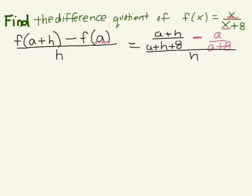We're going to multiply the first term by a plus h plus 8 divided by a plus h plus 8, because we have two fractions and we're trying to add them together, so we have to have the same denominator. On the second term, we're going to multiply by the opposite denominator, a plus 8 times a plus 8.